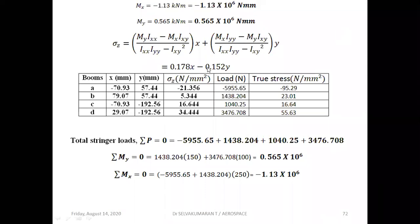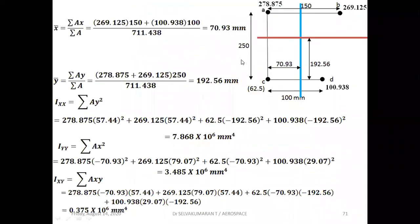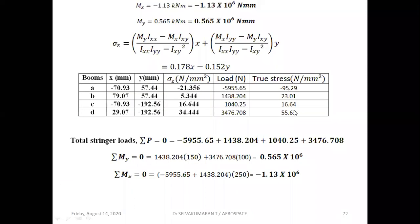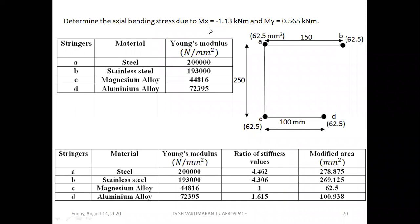Once sigma_z is found, multiply by the modified area to get the load in each respective stringer. If this load is divided by the original area (62.5 mm²), you get the true stress in each stringer. We can also verify: summing all the stringer loads should give zero. Taking moments of these loads about the X and Y axes should give values equal to the applied Mx and My.